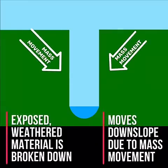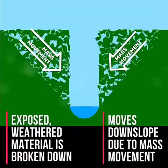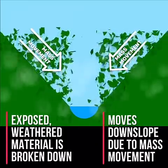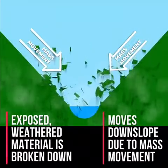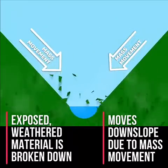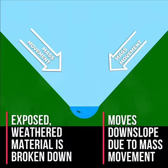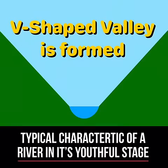As this exposed material is broken down it will move downslope due to mass movement and will enter the river channel to be transported downstream. This creates the typical V-shape of a river valley in its youthful stage.